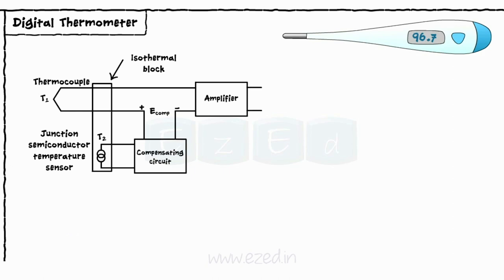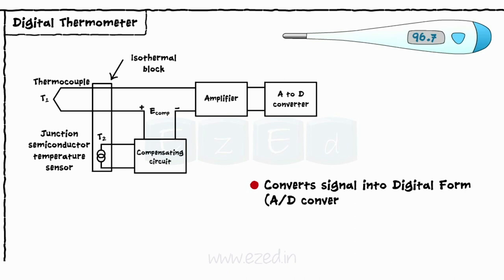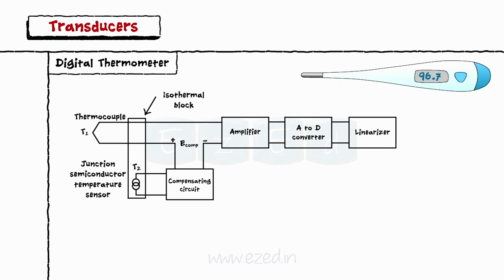This amplified voltage is passed to A to D converter which converts it into digital form. This digital voltage is then linearized by a linearizer and then applied to a digital voltmeter which gives the direct digital display of temperature T1.